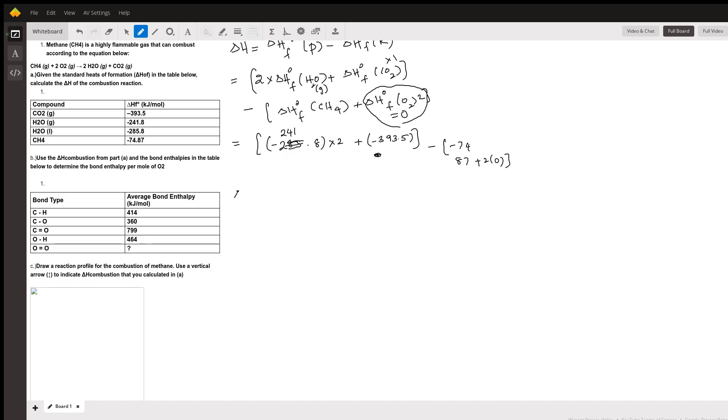So let me check. So it's 241.8 times 2 is 483.6 minus 393.5, which is 877.1 with a negative sign. And on the right side, this is 74.87 with a negative value, and you have a minus sign in front of it. So that becomes 74.87.